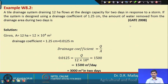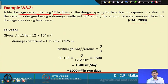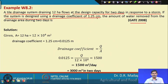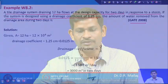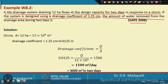Example 2 is from the 2008 GATE exam. A tile drain system draining 12 hectares flows at design capacity for 2 days in response to a storm. The system is designed using a drainage coefficient of 1.25 centimeters. Remember, the drainage coefficient is the depth of water drained from a particular area during 24 hours.